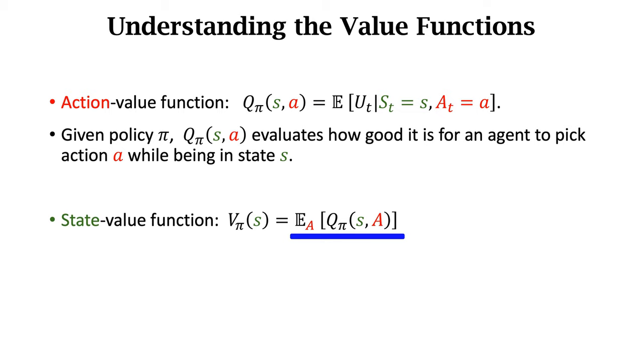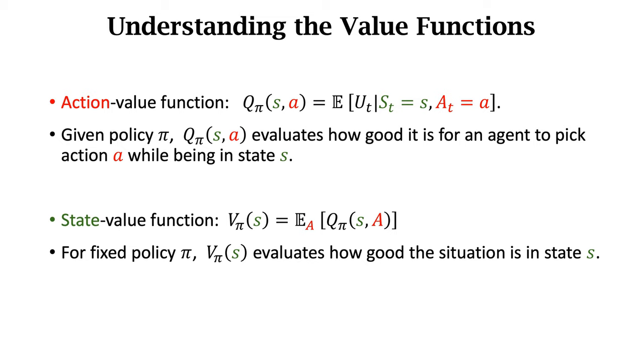We have also learned state value function V_π. It is the expectation of q_π. It further integrates out action a. So V_π is independent of a. V_π depends only on state s and policy π. For fixed policy π, V_π evaluates how good the situation is in state s. It can tell us how likely we are going to win. We can further integrate out the random variable s. Then the result depends only on the policy π. It can evaluate how good the policy π is. It is the objective function of policy-based learning. Policy-based learning basically means maximizing the expectation with respect to policy π.